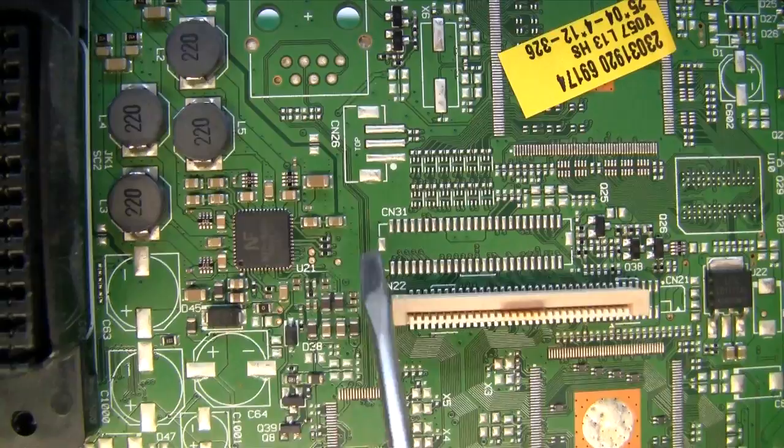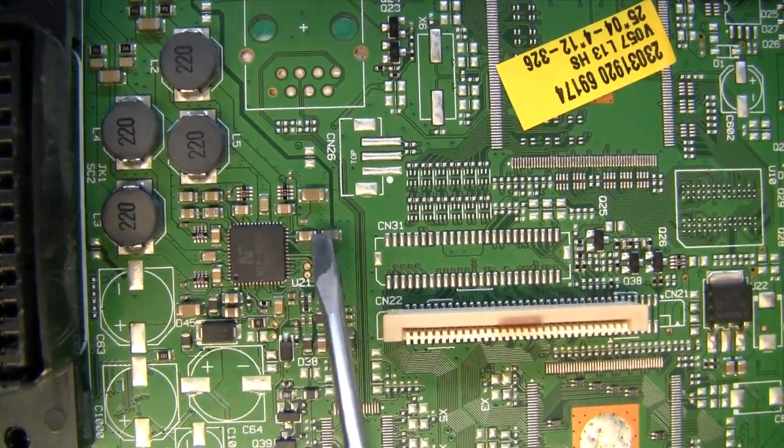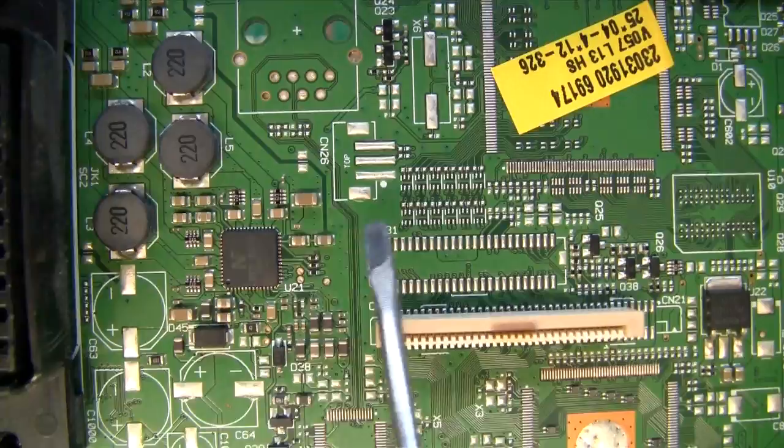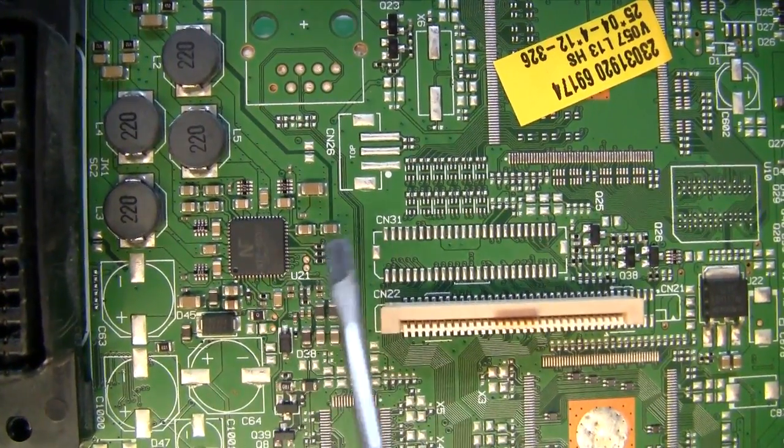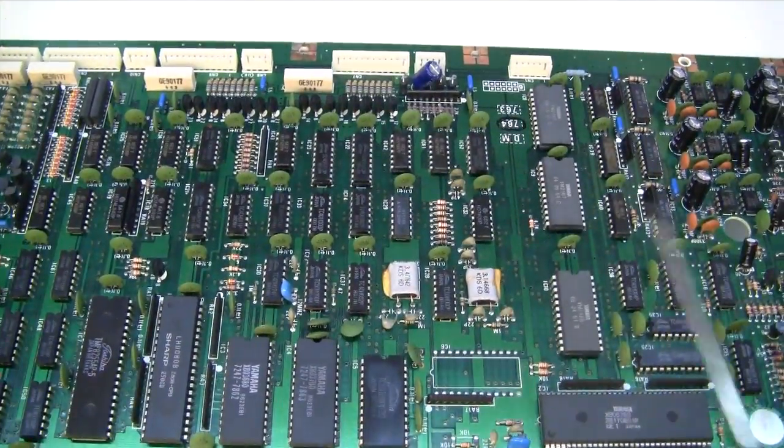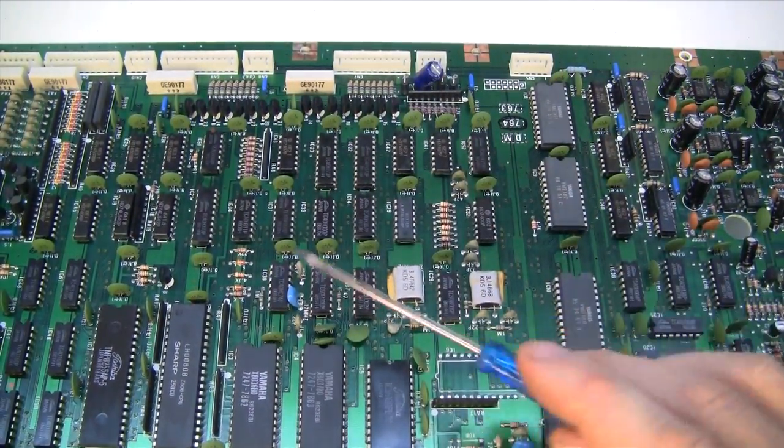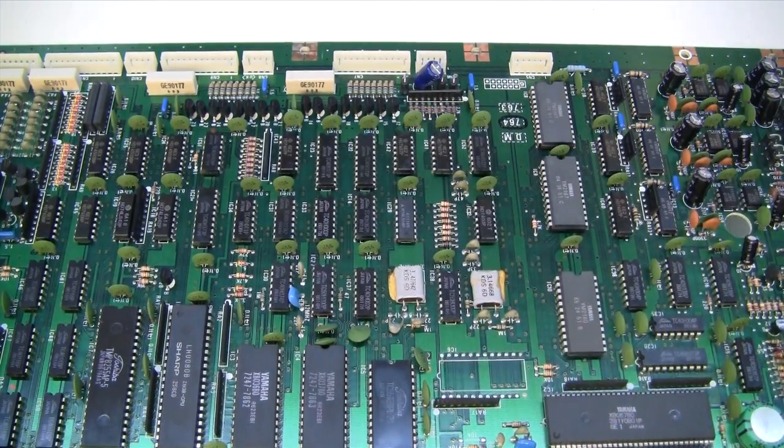Capacitors are also used for decoupling. Here you see lots of little capacitors around this chip and some of those are probably just to stop the noise travelling to this chip from another part of the circuit. On this circuit board, you can see every single chip has its own capacitor to stop the noise travelling from one to the next.